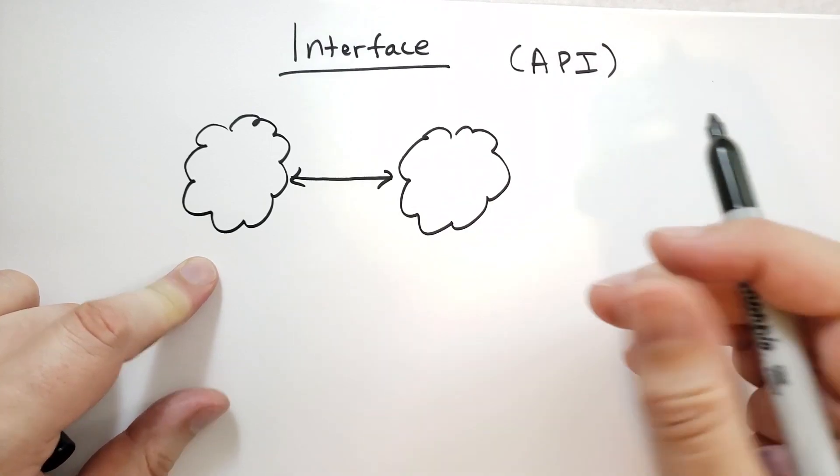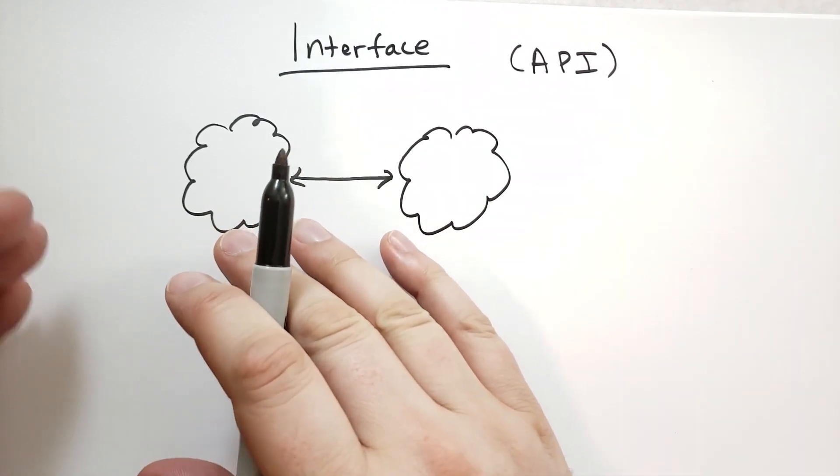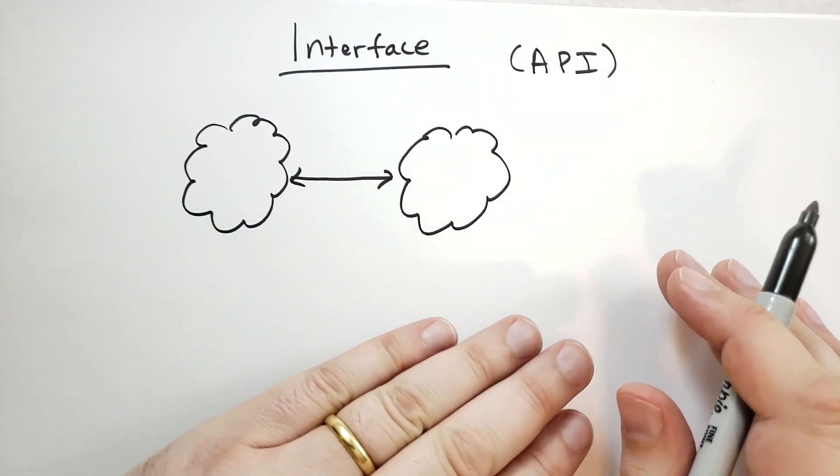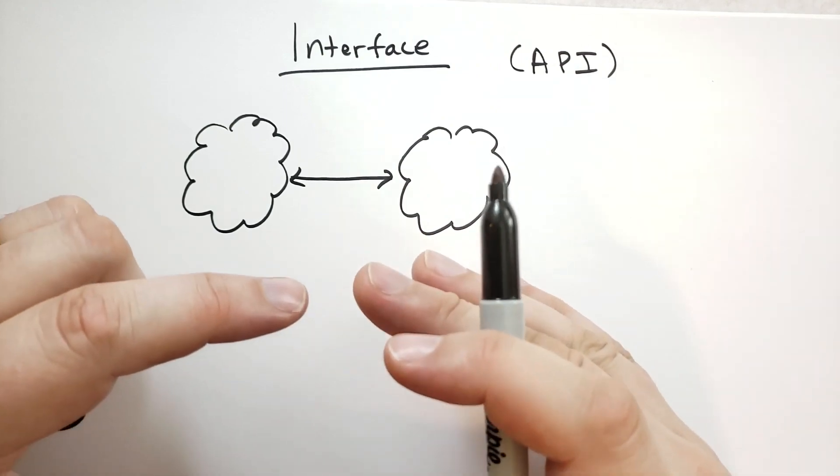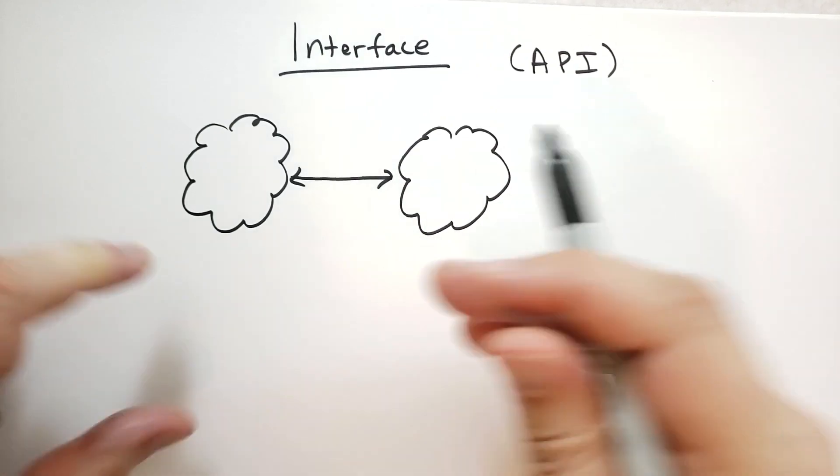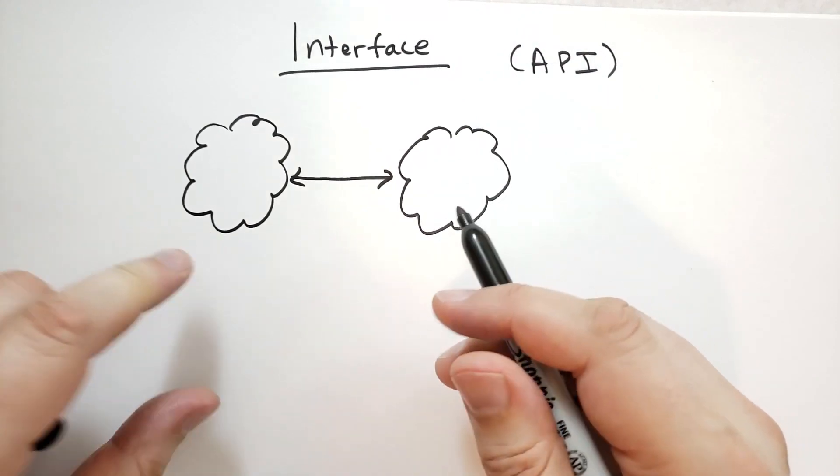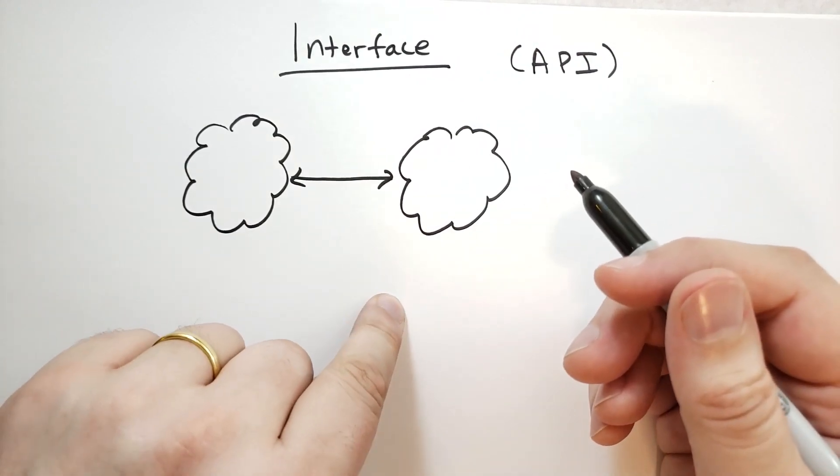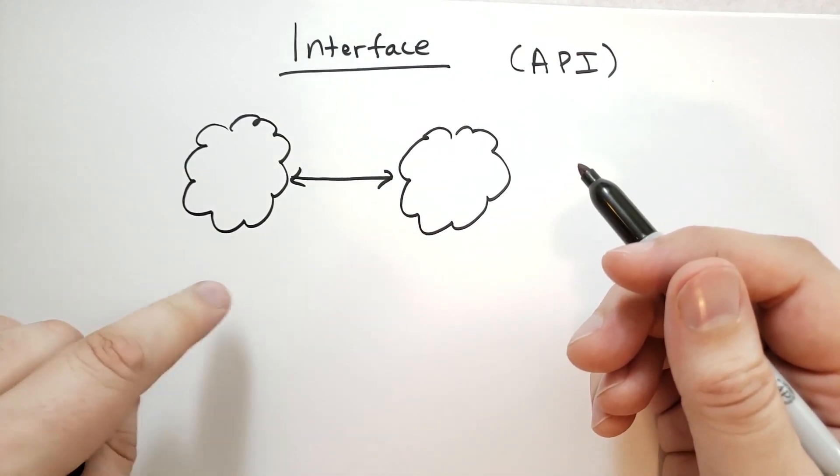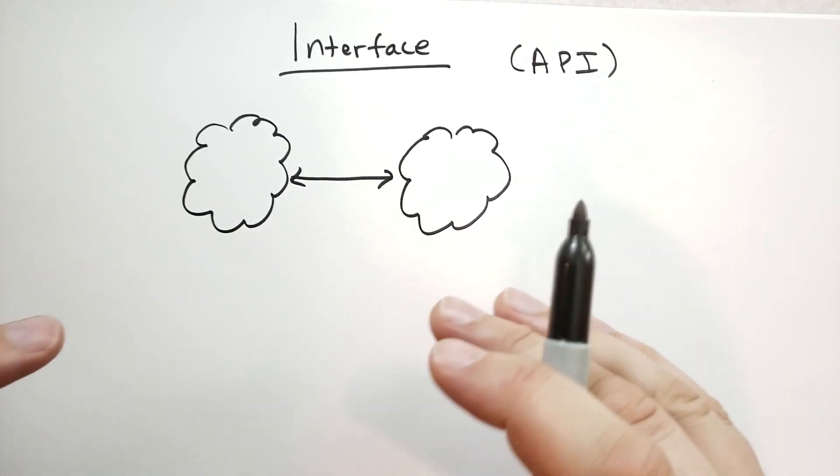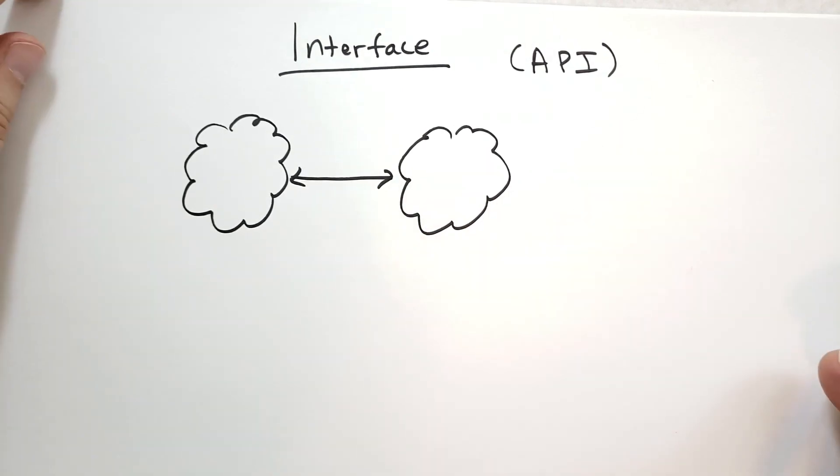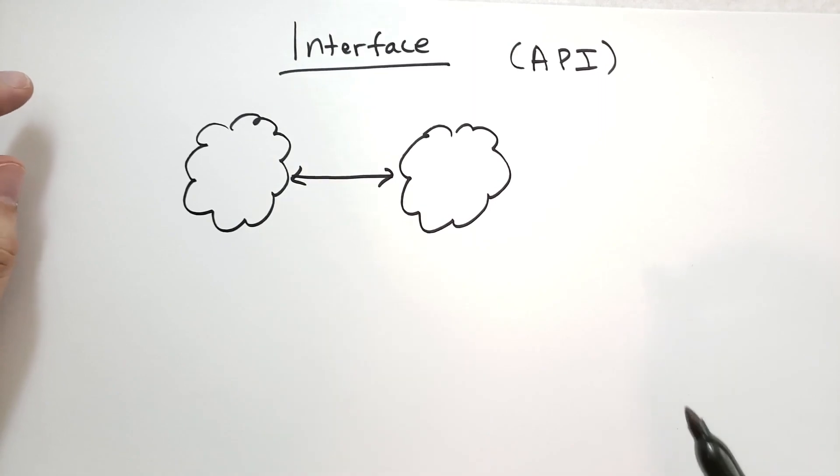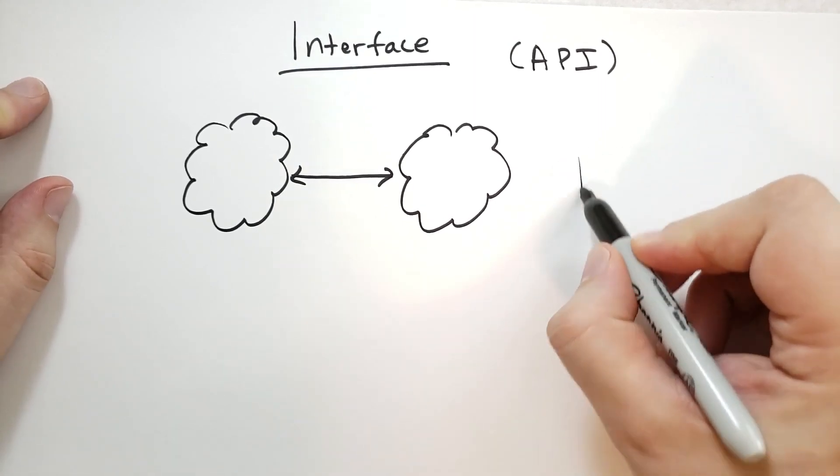So my example before, if you have an object that does X and Y, and you have another object that does X, Y, and Z, then if you combine those two objects together, the interface is what those two objects would require of each other. So if the first object requires the second object to have X, and the second object requires the first object to have Y, then the interface is that. It's just the parts that they rely on.